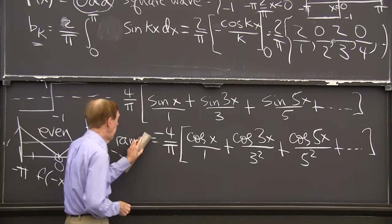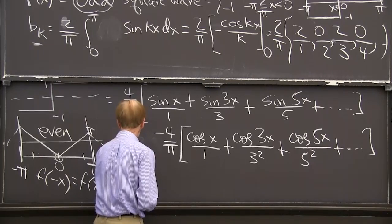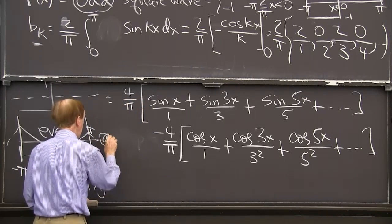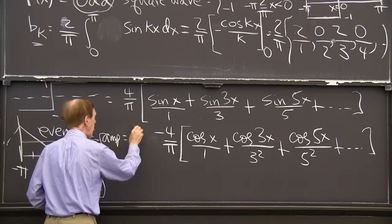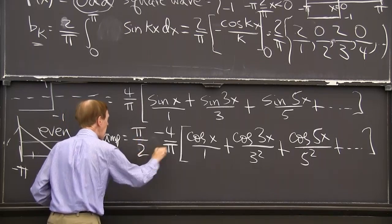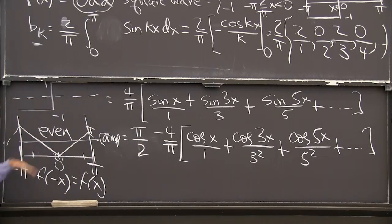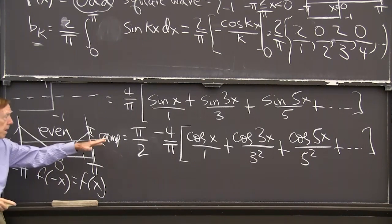Let's hope that's right. OK, so let me sneak in the constant term here. The ramp is, I think I have, the constant term is pi over 2. That's the average value. It would come from the formula and those.